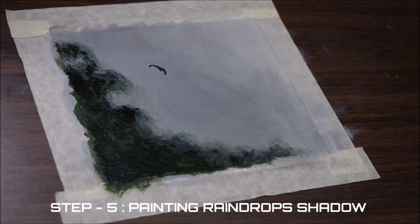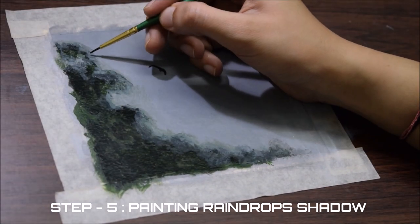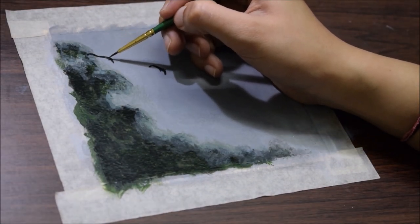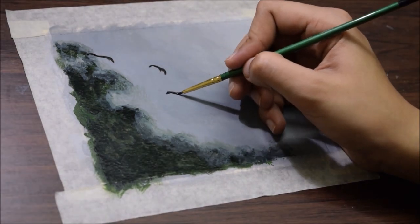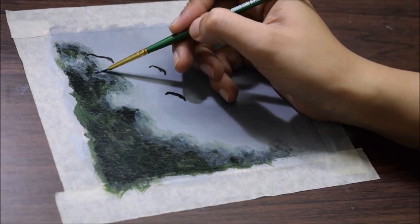Starting with step 5, now our background is ready and I am starting with raindrops. At first, I am painting the darker parts of the drops in different shapes and sizes almost diagonal through the painting.